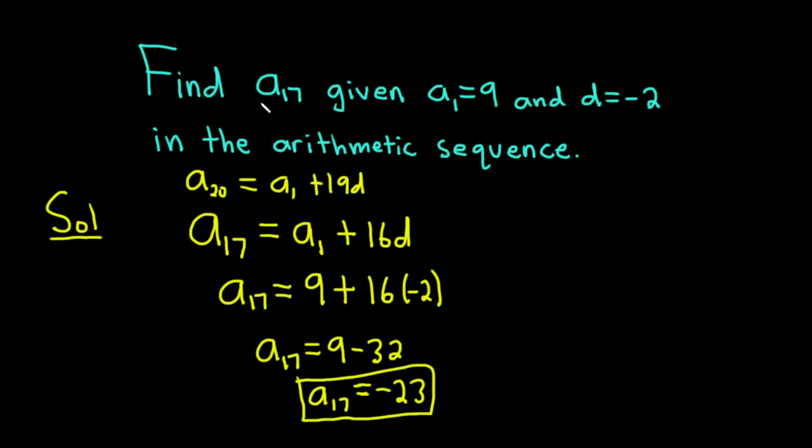So just again, a quick recap. We're looking for the 17th term. We're given the first term and the common difference. So again, the key equation is this one. You're trying to get to a 17, and you're starting at a sub 1. So how do you make this equation true? What do you have to add to the first term to get to the 17th term? Well, 16 copies of d. And the way you know it's 16 is you subtract: 17 minus 1 is 16.